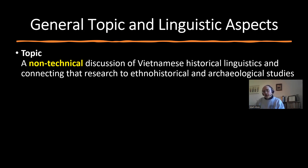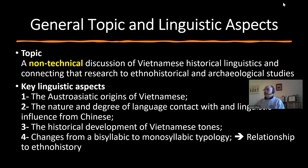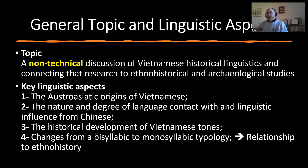I will use simple concepts such as tones, syllables, consonants, and other common language terms. The topics I will discuss include: the Austro-Asiatic origins of Vietnamese — the best term is Austro-Asiatic for the entire language family; the nature and degree of language contact and linguistic influence from Chinese; the historical development of Vietnamese tones; and changes from a bisyllabic typology to a monosyllabic typology. I will relate all of these to ethno-history in an interdisciplinary way.